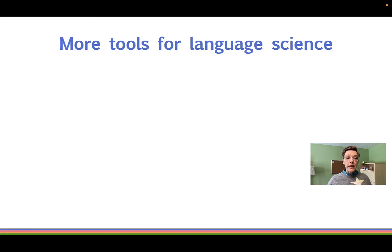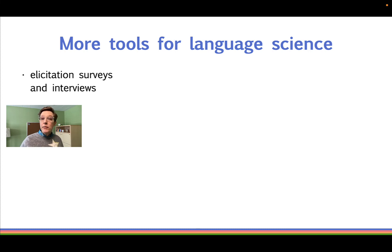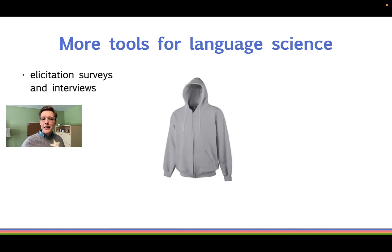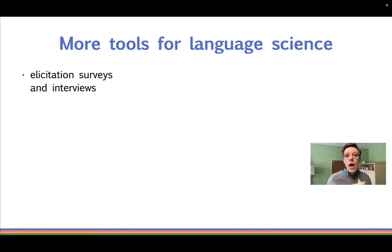Because it can be tricky to access metalinguistic knowledge, you might not want to rely on the acceptability judgments of one single language user. Instead, you could use a survey to gather quantitative data about acceptability from many users. We can also use surveys to elicit the words that people use for particular items — for instance, survey data shows that some people call a certain garment a sweatshirt, others call it a hoodie, and people in Saskatchewan call it a bunny hug. Surveys are particularly useful for learning about regional variation.